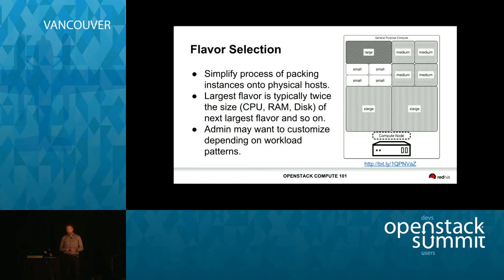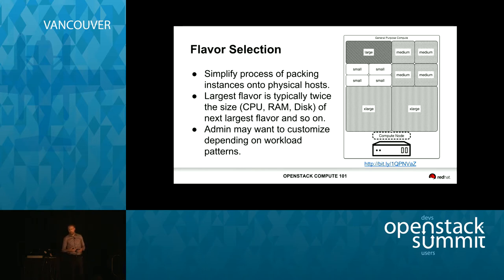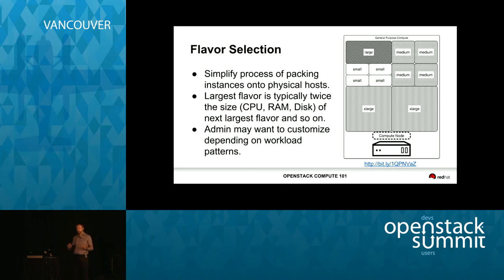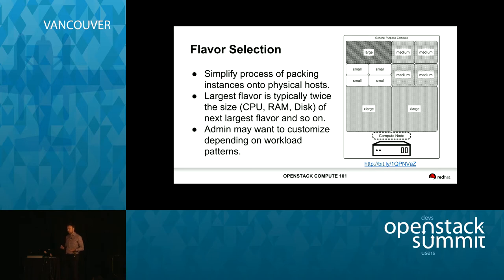Talking about flavor selection — the original idea is that it simplifies the process of packing virtual machine instances into physical hosts. The largest flavor is typically twice the size in CPU, RAM, and disk of the next largest flavor and so on. Administrators may want to customize this depending on the workload patterns they're seeing — if you're leaving a lot of CPU or RAM on the table because of the types of workloads you're running, you may want to customize the out-of-the-box flavors.